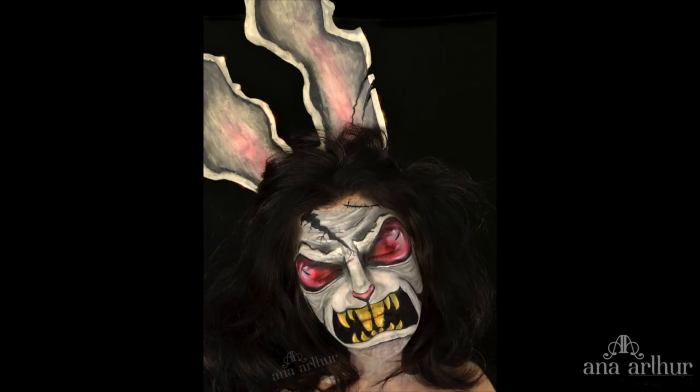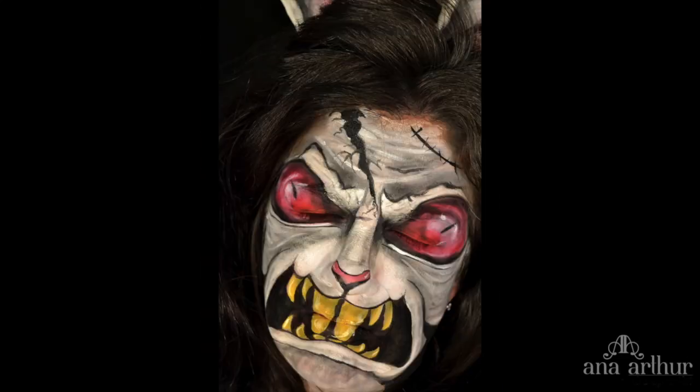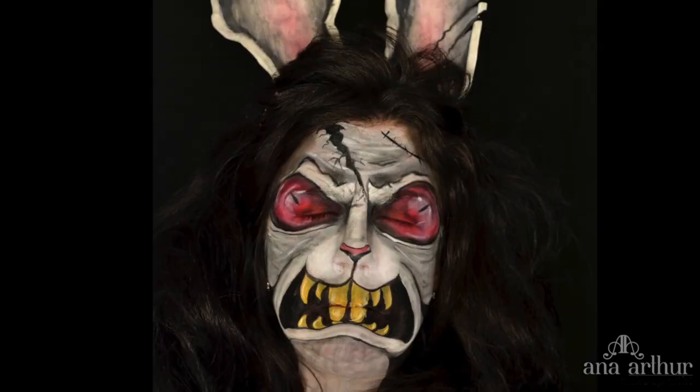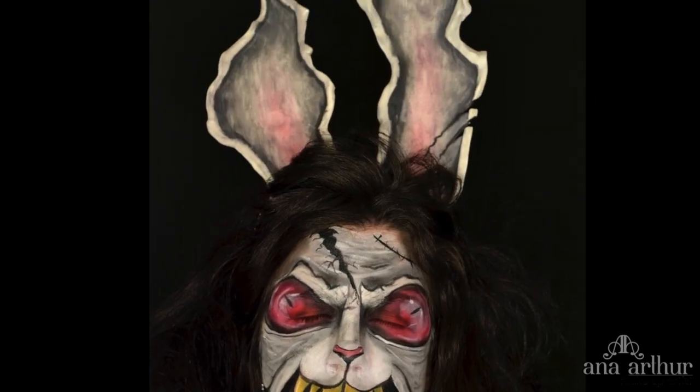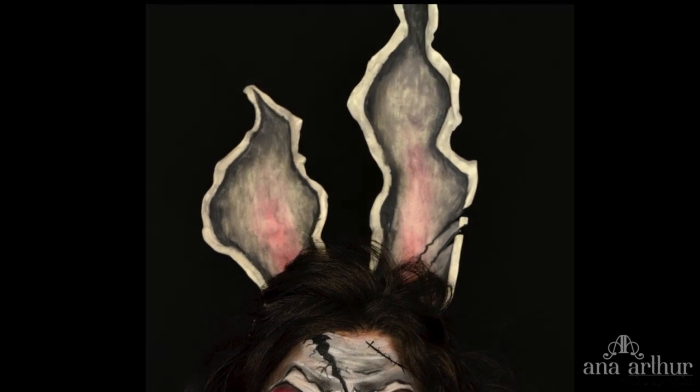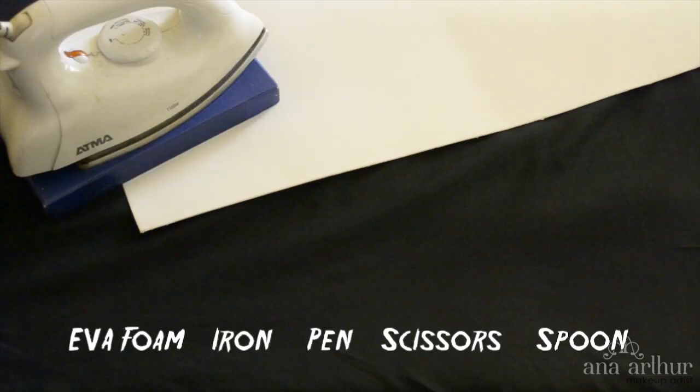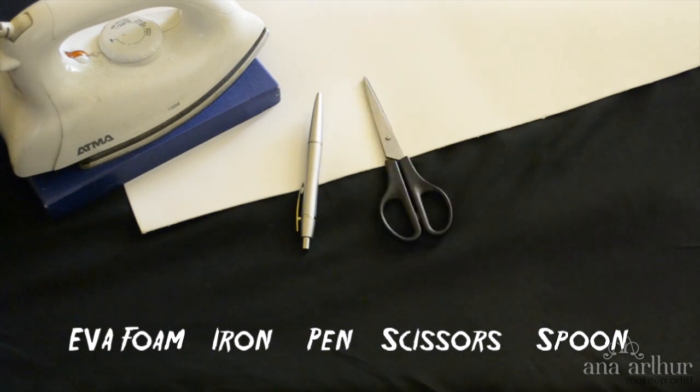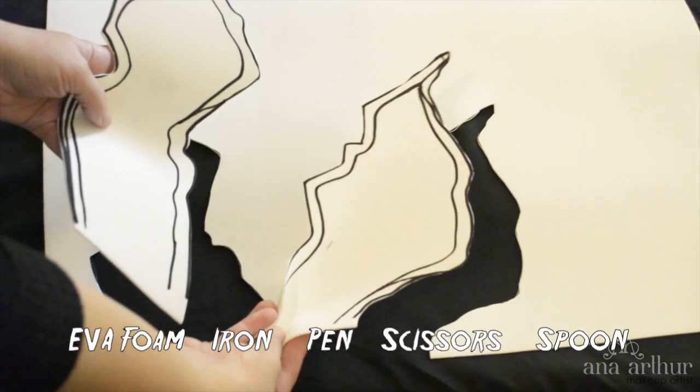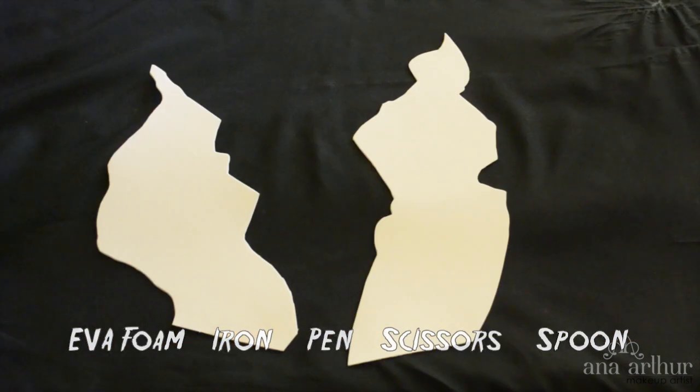Hi, in this video I will show you how I did the evil bunny ears. If you haven't seen the makeup tutorial, you can check it down in the info box where I will have a link. To do the bunny ears, I used foam, an iron, a pen, scissors, and also a spoon. The first thing I did was cut the parts that I wanted and I started heating the ears, so I started with the top.